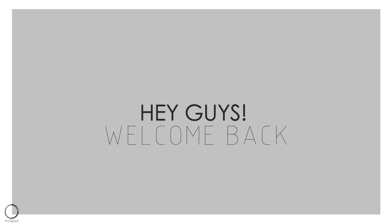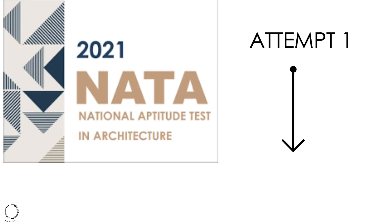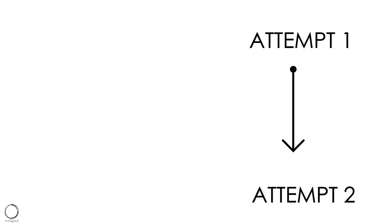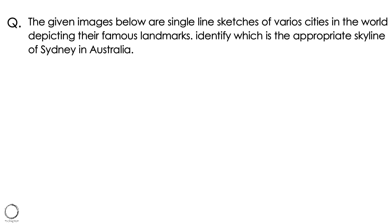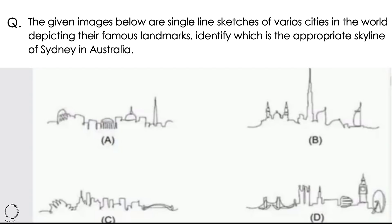Hi guys, welcome back. Today we will look into a specific question type video which will help you with your knowledge of world's important towers and how they have become the identity of their specific country or city. This specific question was asked in NATA 2021 attempt 1 and will surely have something similar in attempt 2 as well. The question was about single line sketches of various cities depicting their famous landmarks. So today let's look into skylines of many more architecturally rich countries or cities.